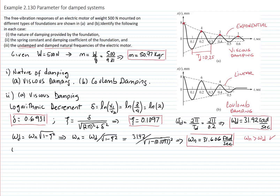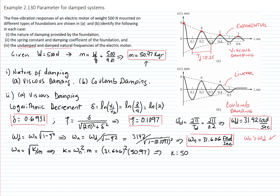The natural frequency is defined as the square root of the spring constant divided by the mass, so we solve for k: k equals the natural frequency squared times the mass. With a natural frequency of 31.606 rad/s and mass of 50.97 kg, we compute k.